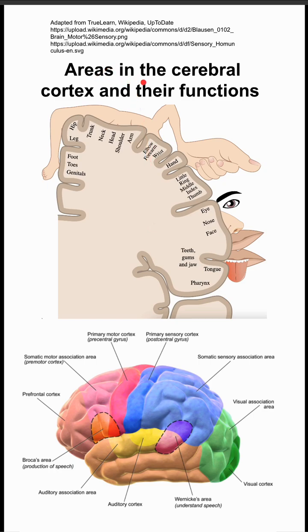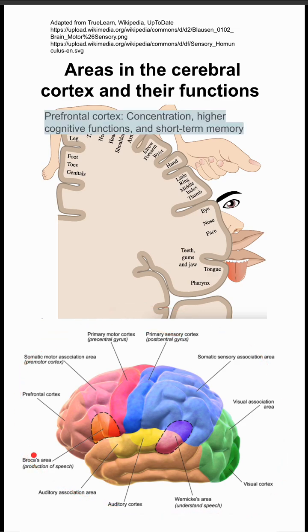These are the areas of the cerebral cortex and their functions. You can see them color-coded in this image down here. Let's go through them. The prefrontal cortex is for concentration, higher cognitive functions, and short-term memory.